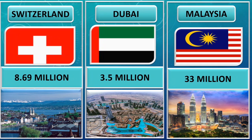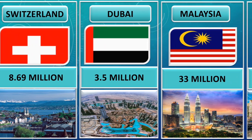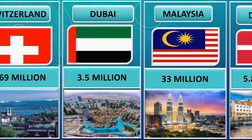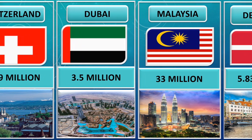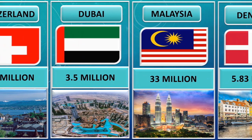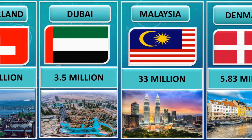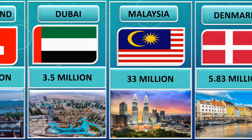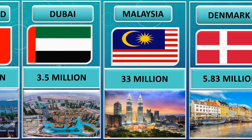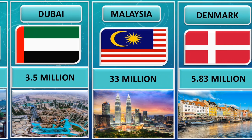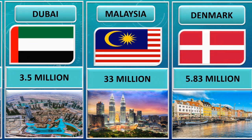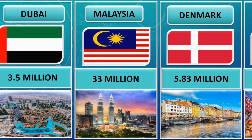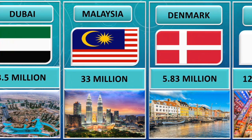Population of Dubai is 3.5 million. These are largest population countries from different countries of the world. Population of Malaysia is 33 million.